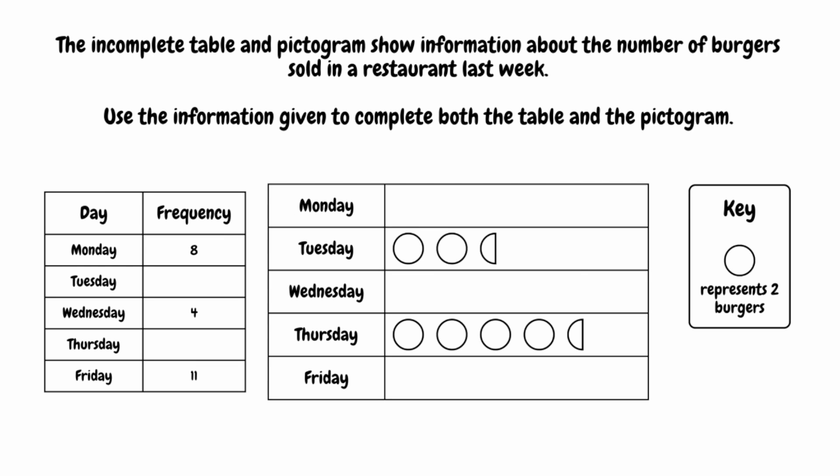So to begin with, we have that the incomplete table and pictogram show information about the number of burgers sold in a restaurant last week. We've got to use the information to complete the table and the pictogram. So let's complete the frequency table to begin with.